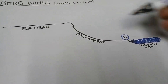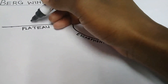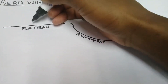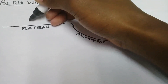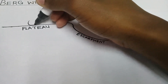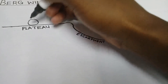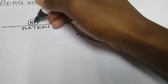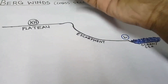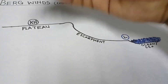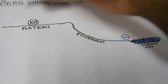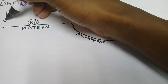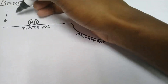In winter, the Kalahari high is dominant over the land. The Kalahari high pressure — the Kalahari anticyclone — is dominant over the land of South Africa in winter. This means there is more subsiding air hitting the land of South Africa.